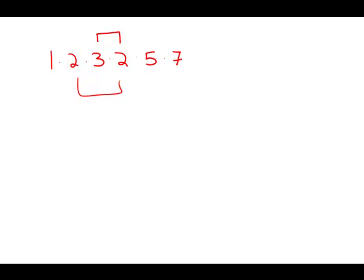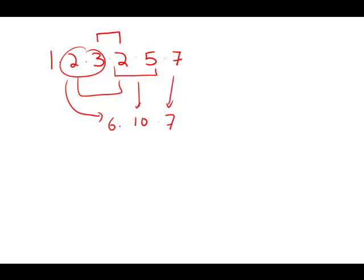So it's really just a matter of multiplying these numbers. I'm going to notice right away that 5 times 2 is 10, and 2 times 3 is 6. Then I'm going to multiply 6 times 7, that's 42, times 10, which is 420. And this is answer choice A.